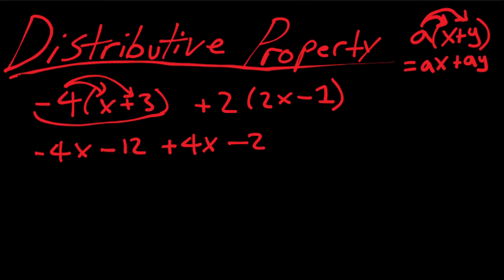Now to simplify this equation, all we need to do is collect like terms. So we have the 4x and the negative 4x, these cancel out. And we're just left with negative 12 and the negative 2, so that leaves us with negative 14.